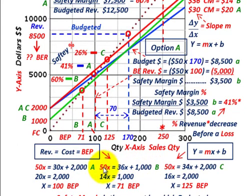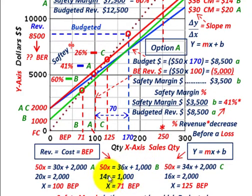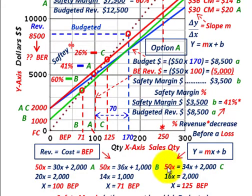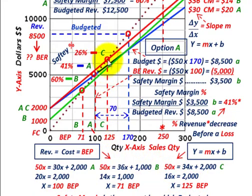For option B, revenues are 50X and cost is 36X plus $1,000 in fixed cost. Solving for X: 50 minus 36 gives 14X equals $1,000, so division gives X equals 71. Option B has a break-even quantity of 71 units. For option C, our revenues of 50X equals 34X plus $2,000 fixed cost. Solving: 16X equals 2,000, so division gives X equals 125 units. Option C has a break-even quantity of 125 units.